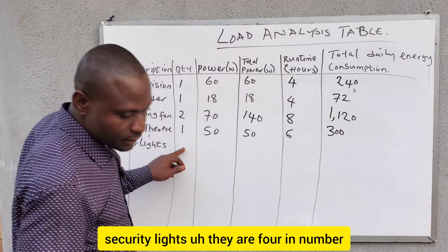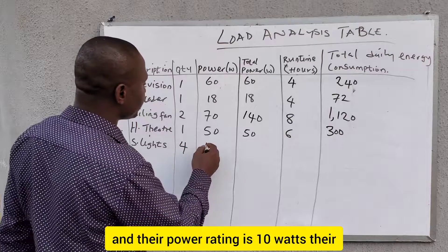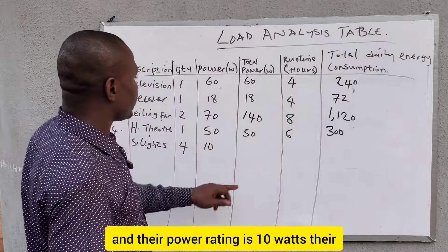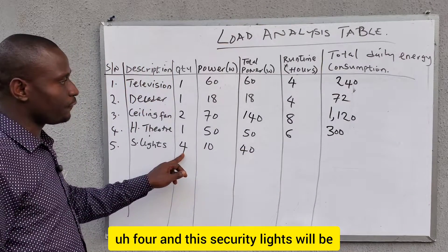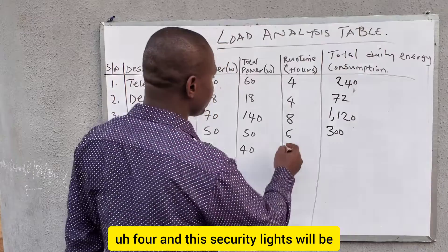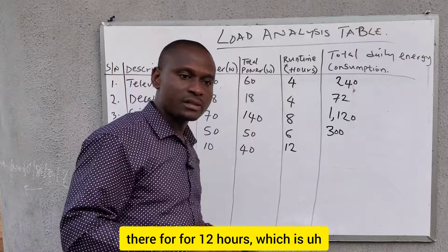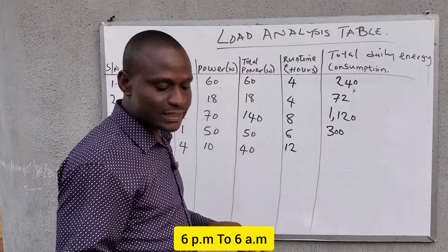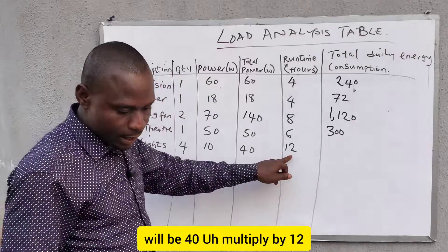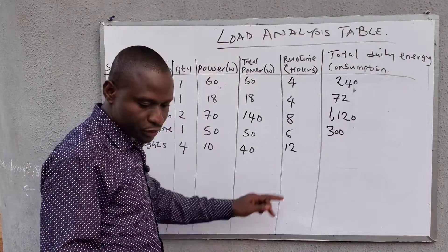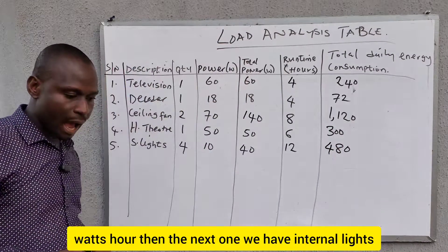Number five is security lights — four in number, power rating 10 watts each. Their total power is 10 times four, which is 40 watts. These security lights will be on for 12 hours every day — from 6 p.m. to 6 a.m. Their total daily energy consumption is 40 multiplied by 12, which is 480 watt-hours.